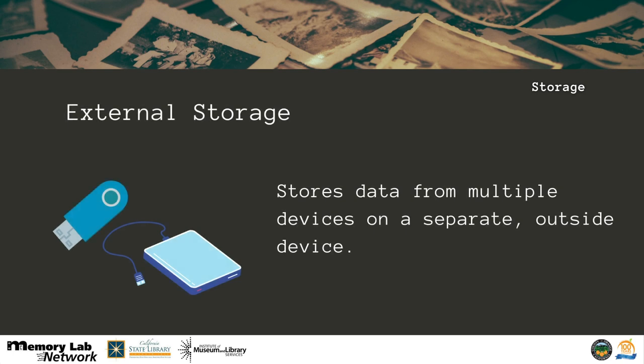External storage stores data from multiple devices on a separate, outside device — for example, external hard drives and USB flash drives. Of these, external hard drives are the best choice. They are sturdy and can store larger amounts of data in one place. The advantage is that you don't have a minimum storage capacity — if you purchase a 2TB external hard drive, you own 2TB worth of space. This makes external storage less expensive than cloud storage if you have a lot of photos. The disadvantage is that external storage can be damaged and your data may rot or decay over time, which is why it is important to check your storage locations at least once a year and use at least two storage options.